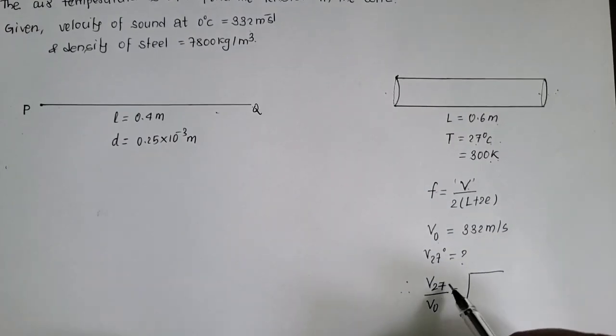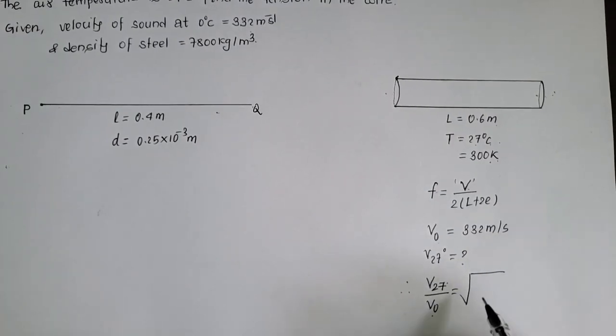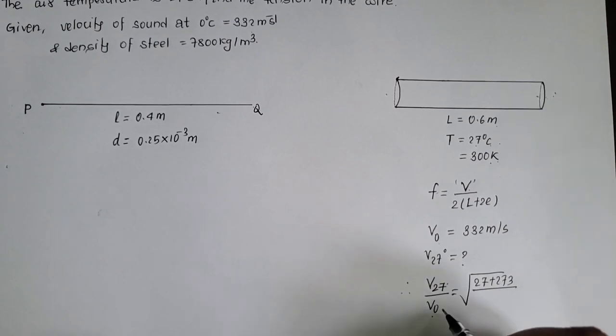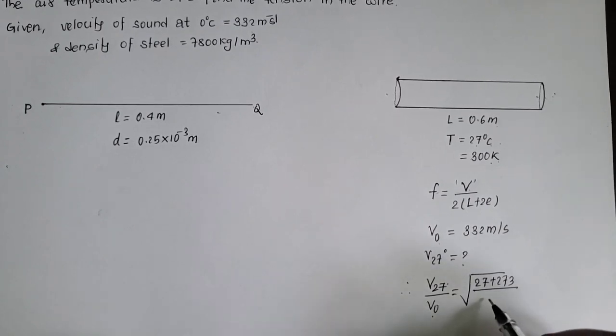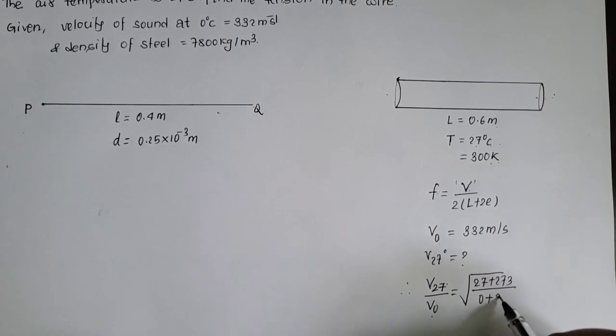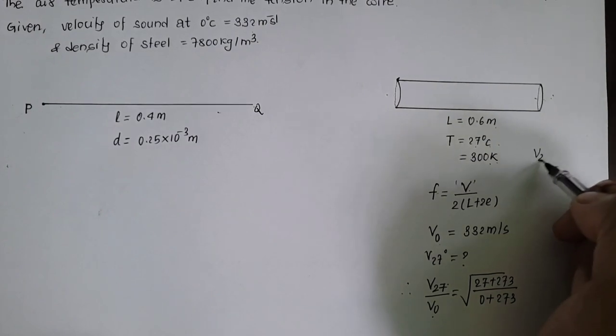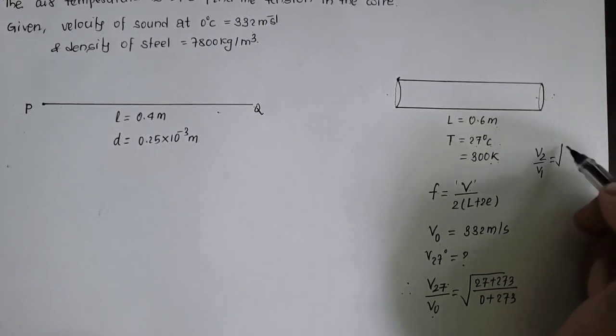Velocity of sound 27 degree celsius ma velocity of sound a 0 degree celsius ku velocity of sound a 0 degree celsius ku velocity proportional ouncha square root of temperature. That means 0 degree celsius that is 0 plus 273. Yeo formula I use gharhe maili V2 by V1 equal to square root of T2 by T1 vad.